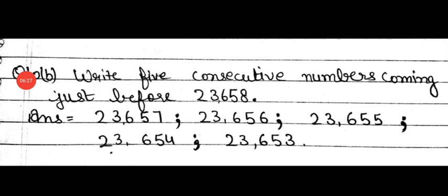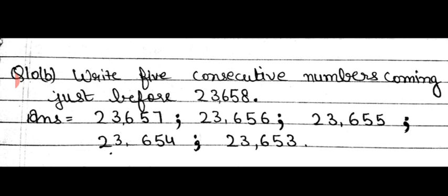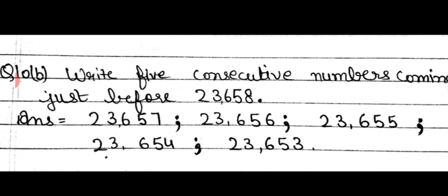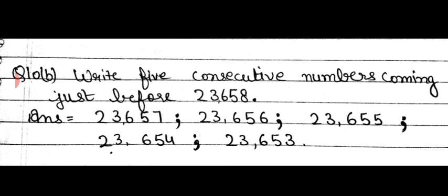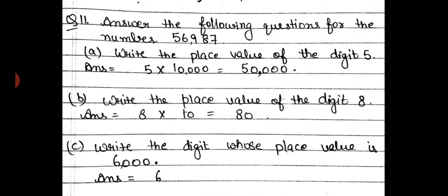Part B: write 5 consecutive numbers coming just before 23,658. Before means you do the back counting. So before 23,658 we have 23,657, 23,656, 23,655, 23,654, and 23,653. Now we have the last question of this exercise.